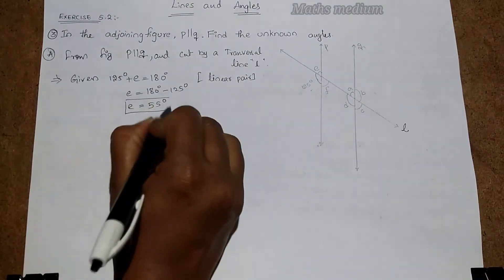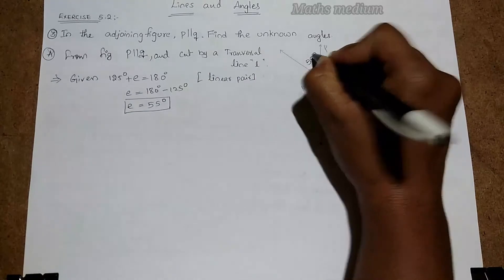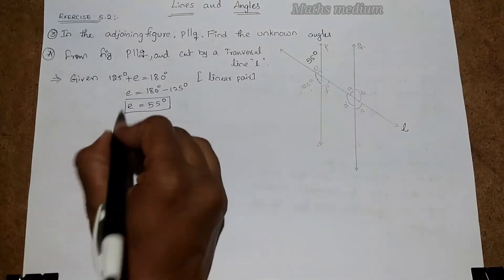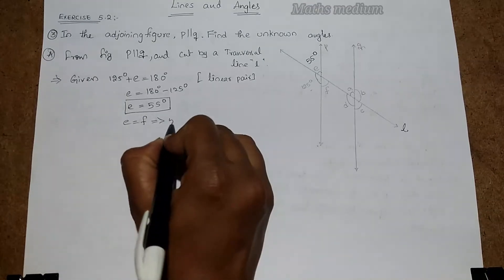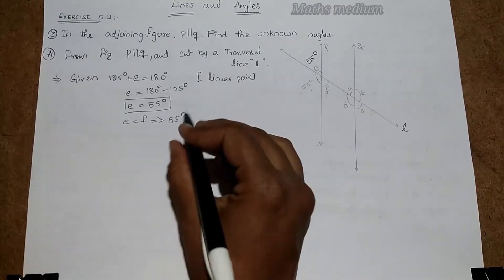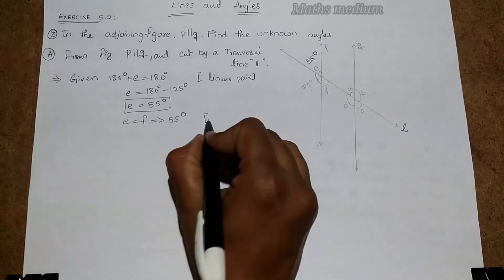Here we get E value, this is 55 degrees. From this E, we can say E is equal to F, that is 55 degrees only, because of vertically opposite angles.